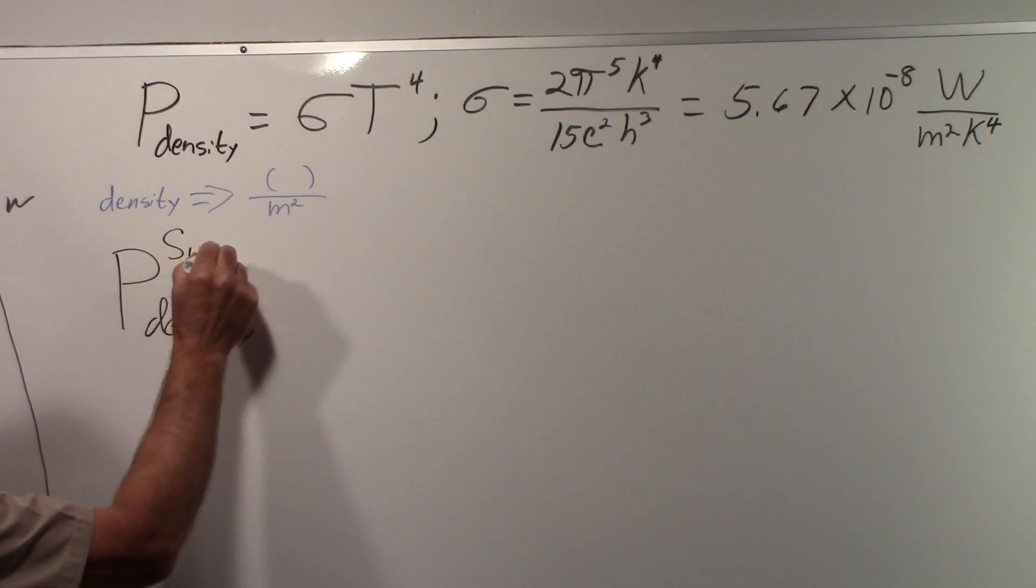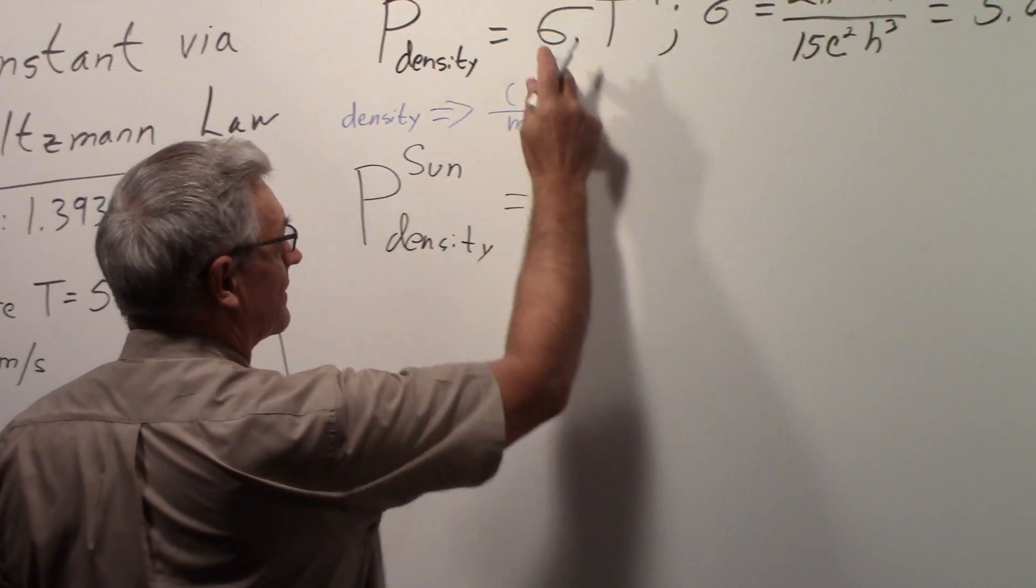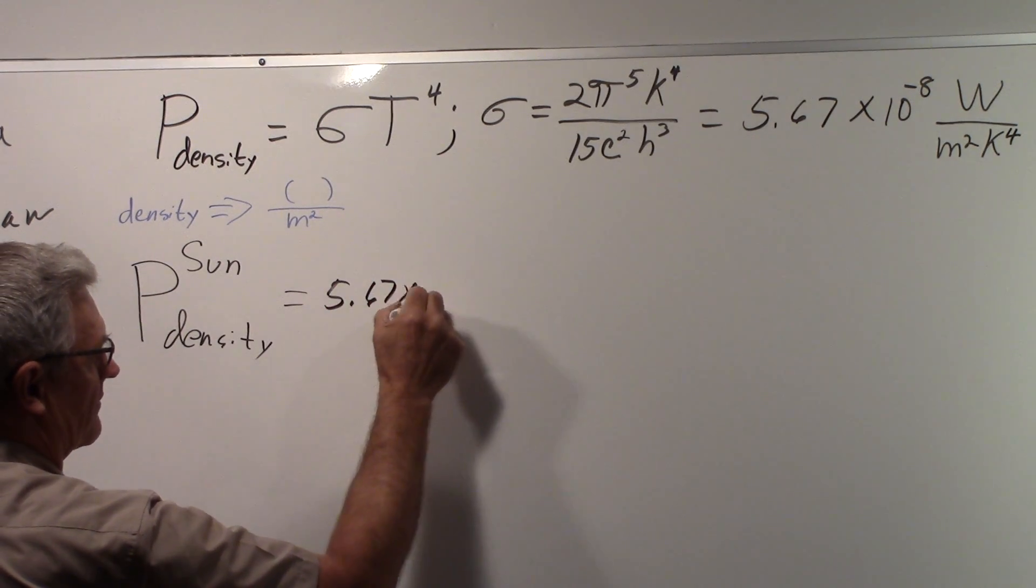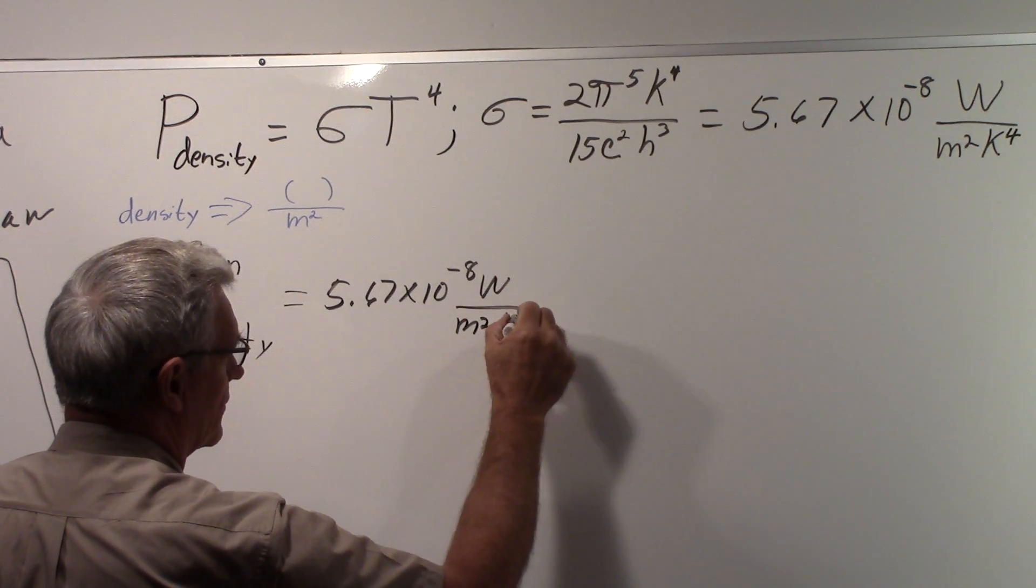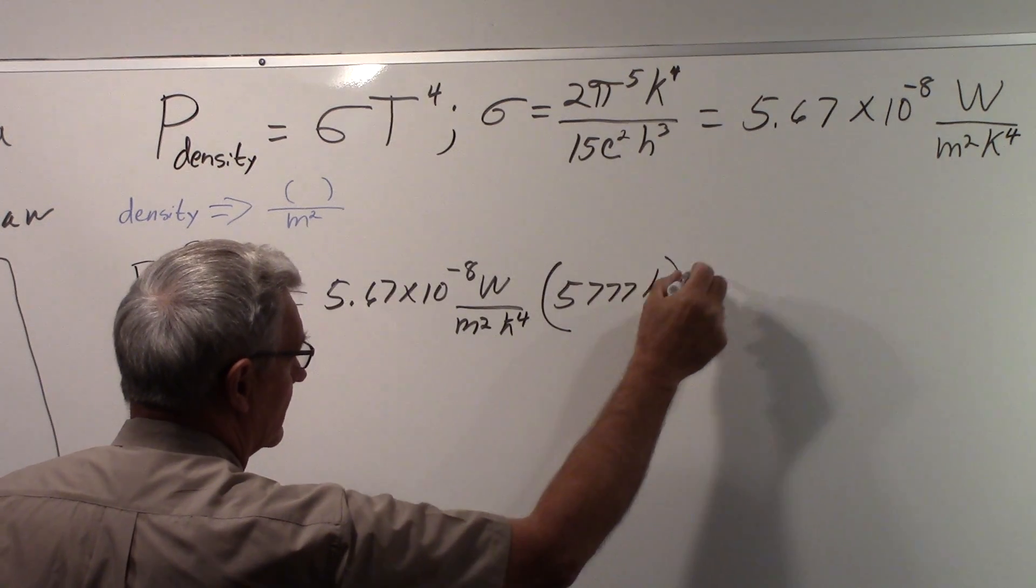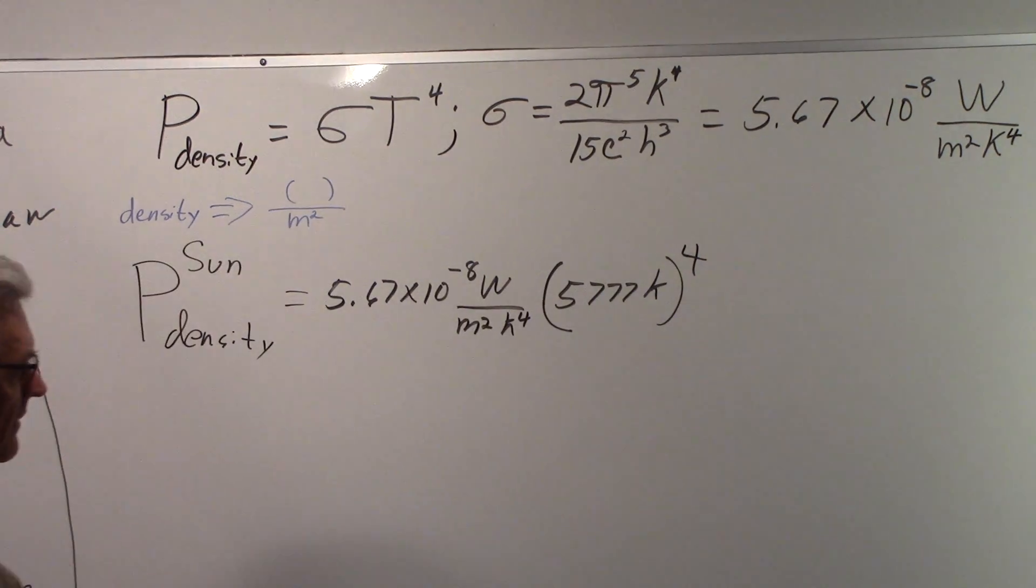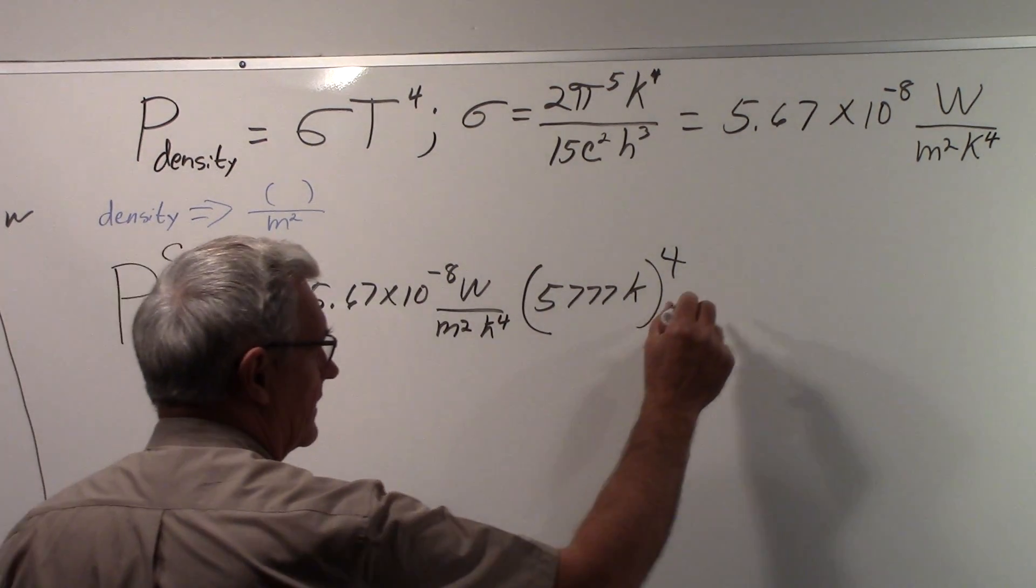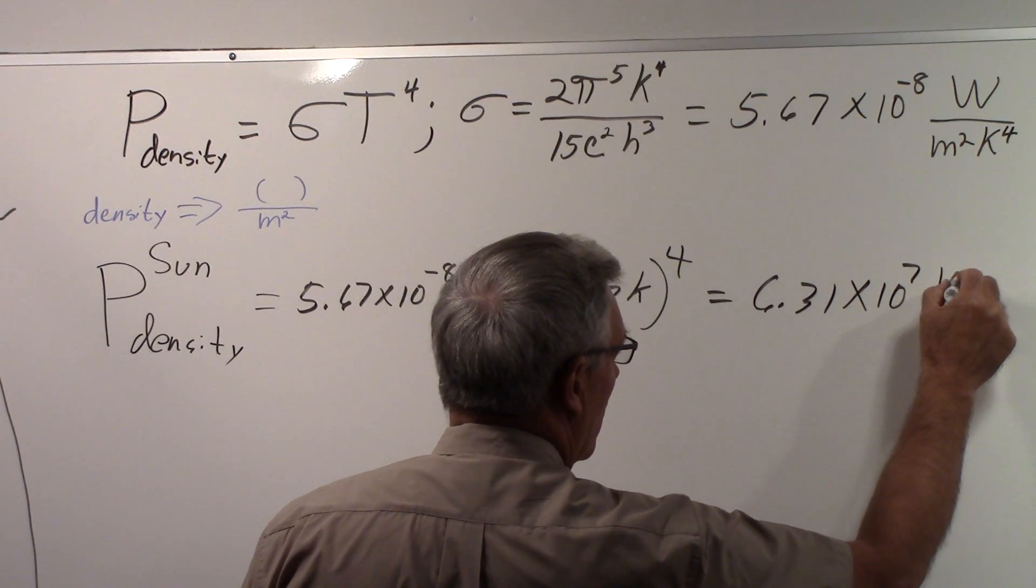For the sun, we'll do the calculation for the sun. So we need the sun's temperature, which we have here. So it's going to be Stefan-Boltzmann's constant, 5.67 times 10⁻⁸ watts per meter squared Kelvin to the fourth power. And we're going to multiply that by the sun's temperature in Kelvin to the fourth power. And if we work those numbers out, we'll get approximately 6.31 times 10⁷ watts per meter squared.